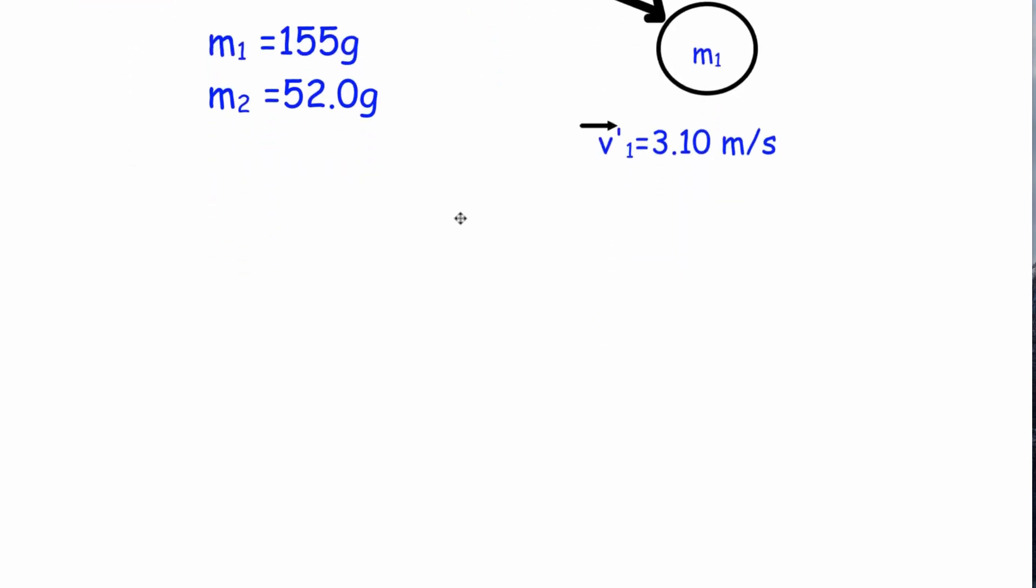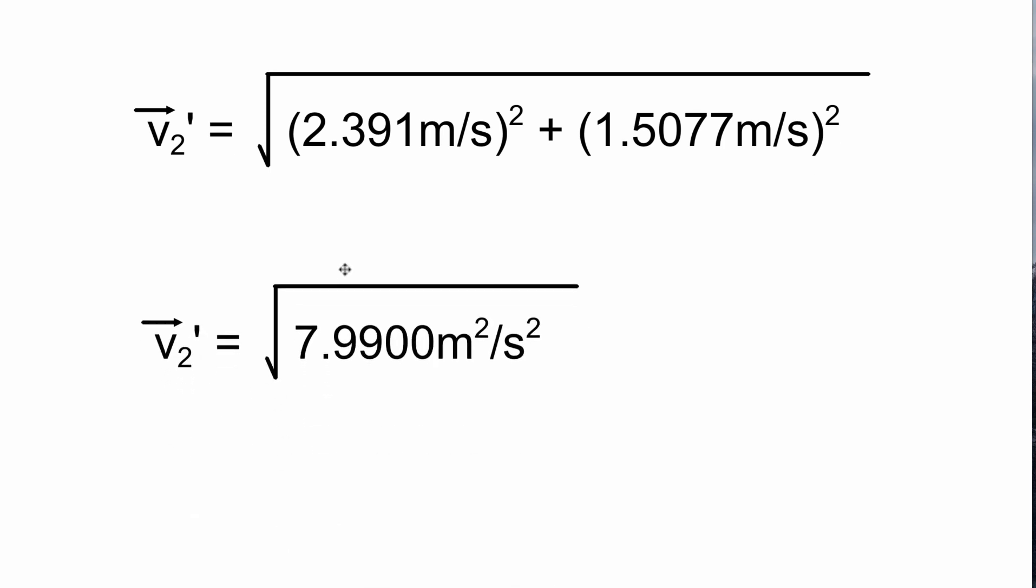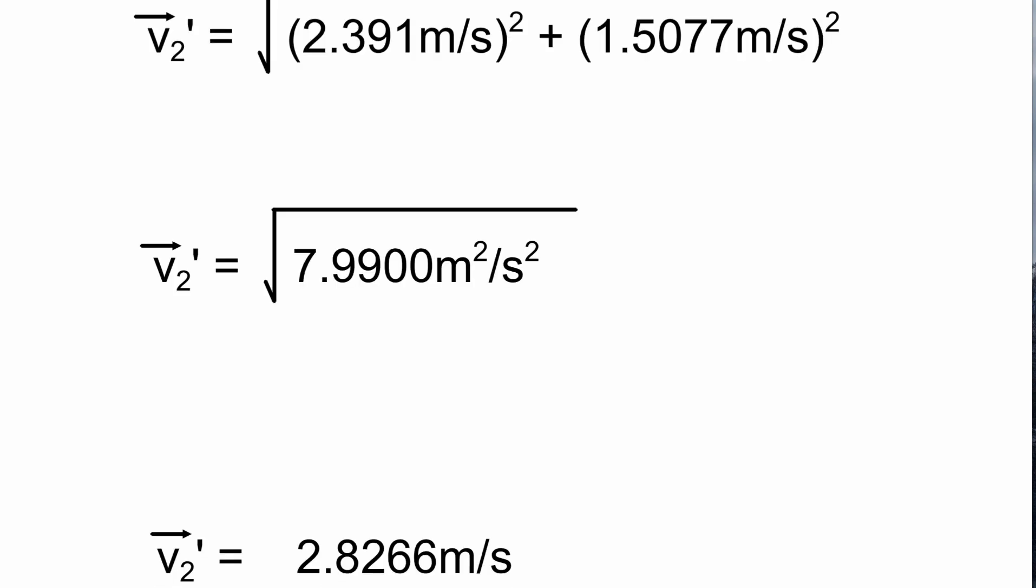It's a right angle triangle, we're just going to use Pythagorean theorem. The vector v2 prime is equal to the square root of 2.391 meters per second squared plus 1.5077 meters per second squared. When we do that calculation we get v2 prime is the square root of 7.9900 meters squared per second squared. Taking the square root gives us 2.8266 meters per second. That is the magnitude of the vector. We also need to find the angle.